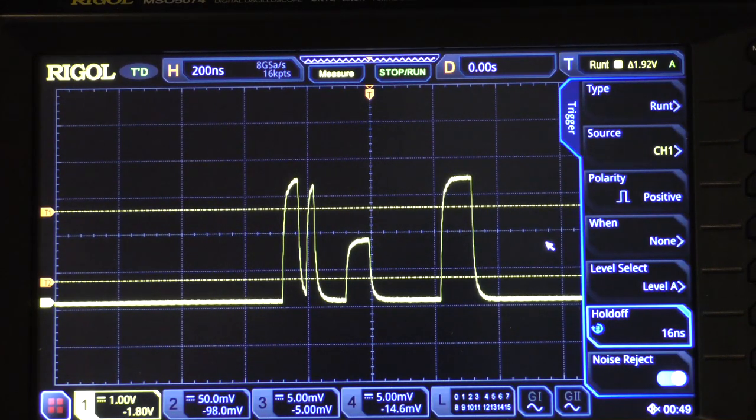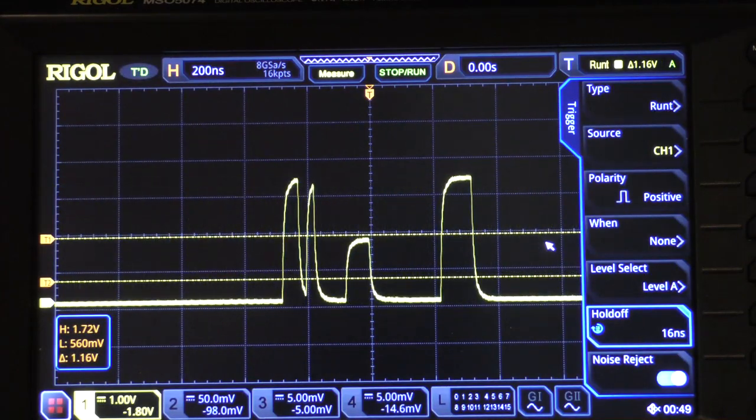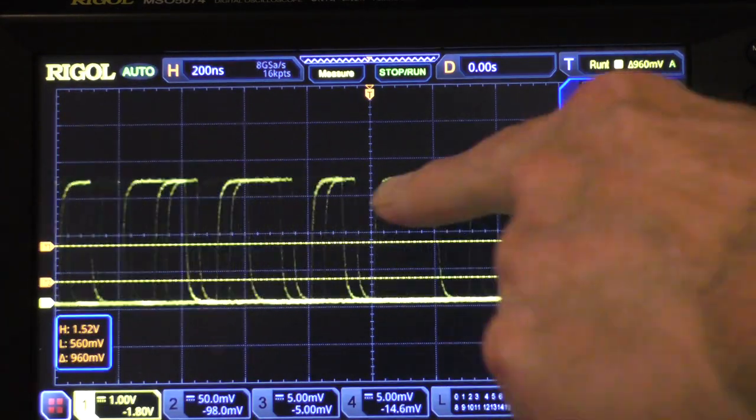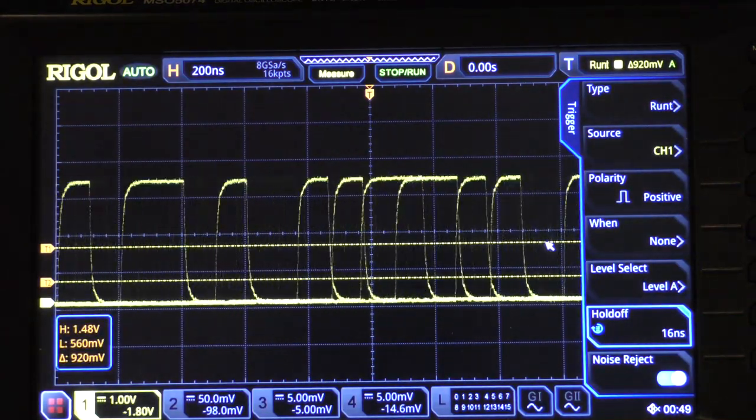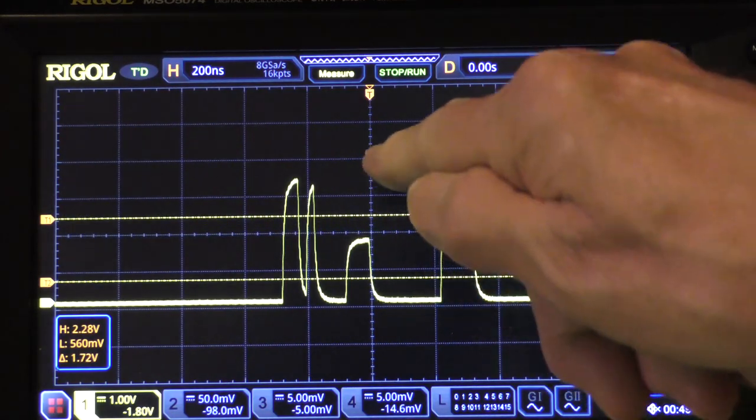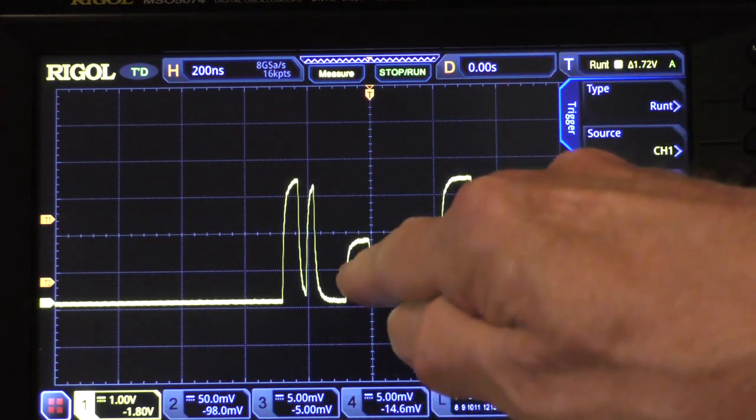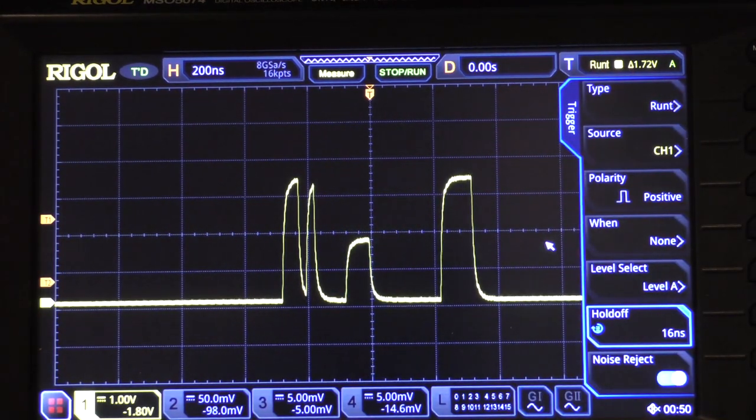Now let's suppose that that runt had been a little taller than that. If you notice that when level A drops below the upper level of the runt it loses the trigger. As long as level A is above and level B is below the maximum height of the runt pulse, it will trigger on that runt pulse. And that is the way you use the runt trigger.